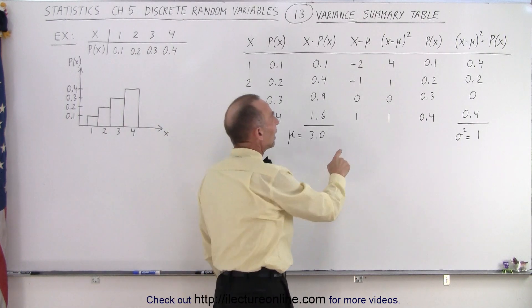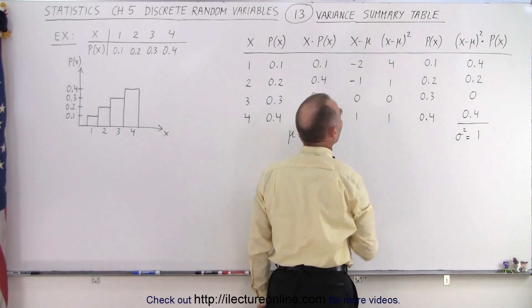Then we take each of those differences and we square them. We get 4, 1, 0, and 1.